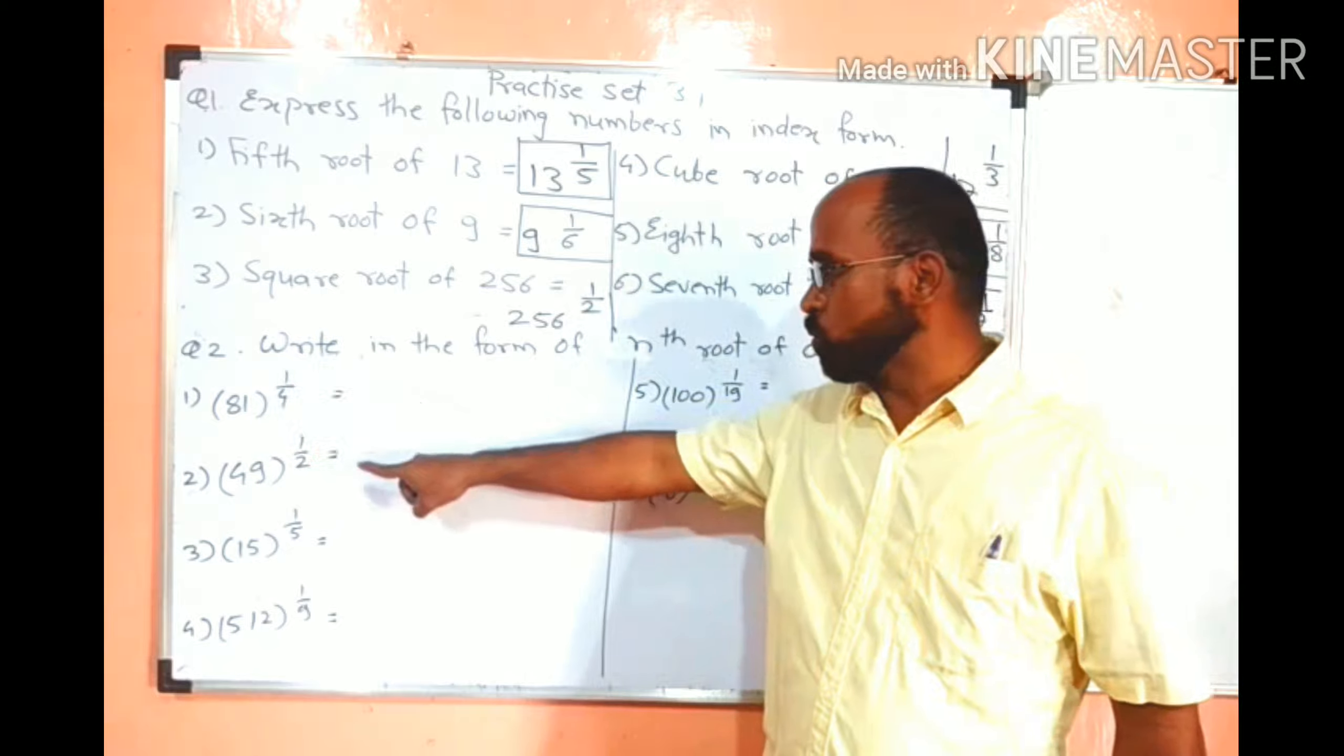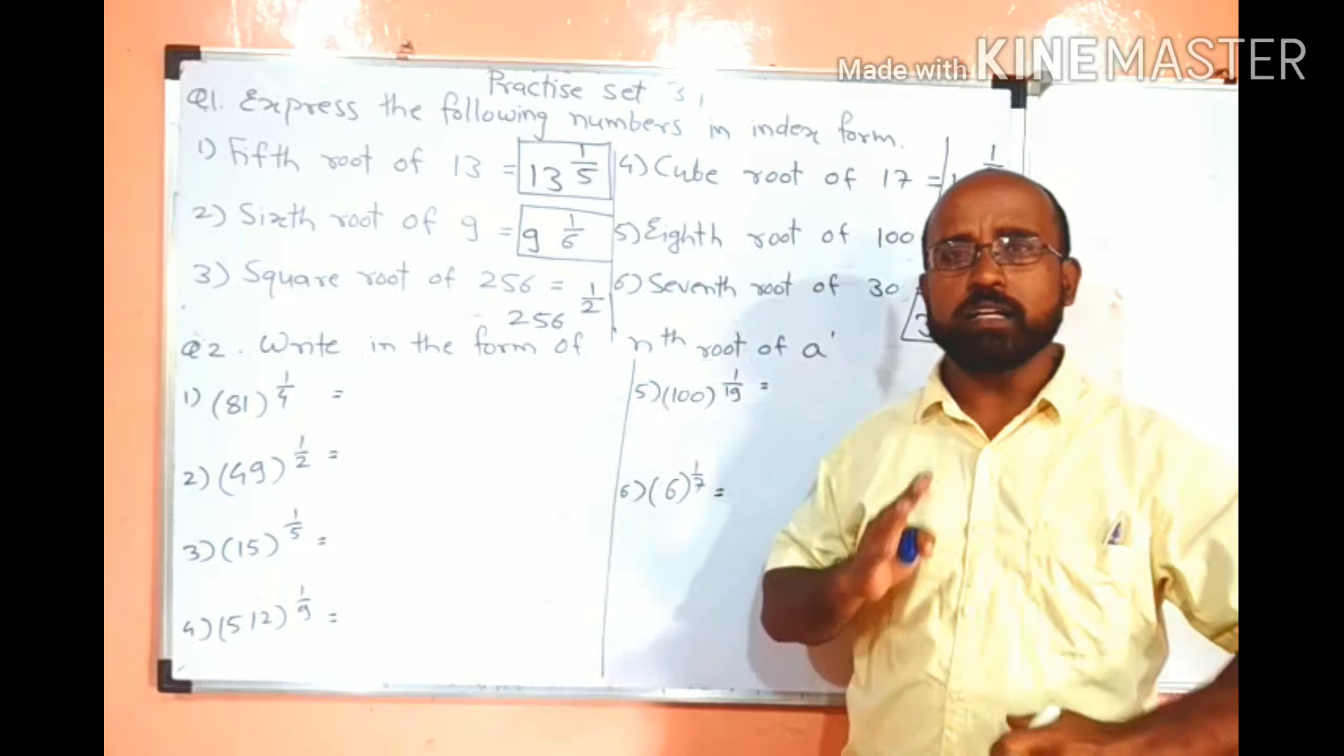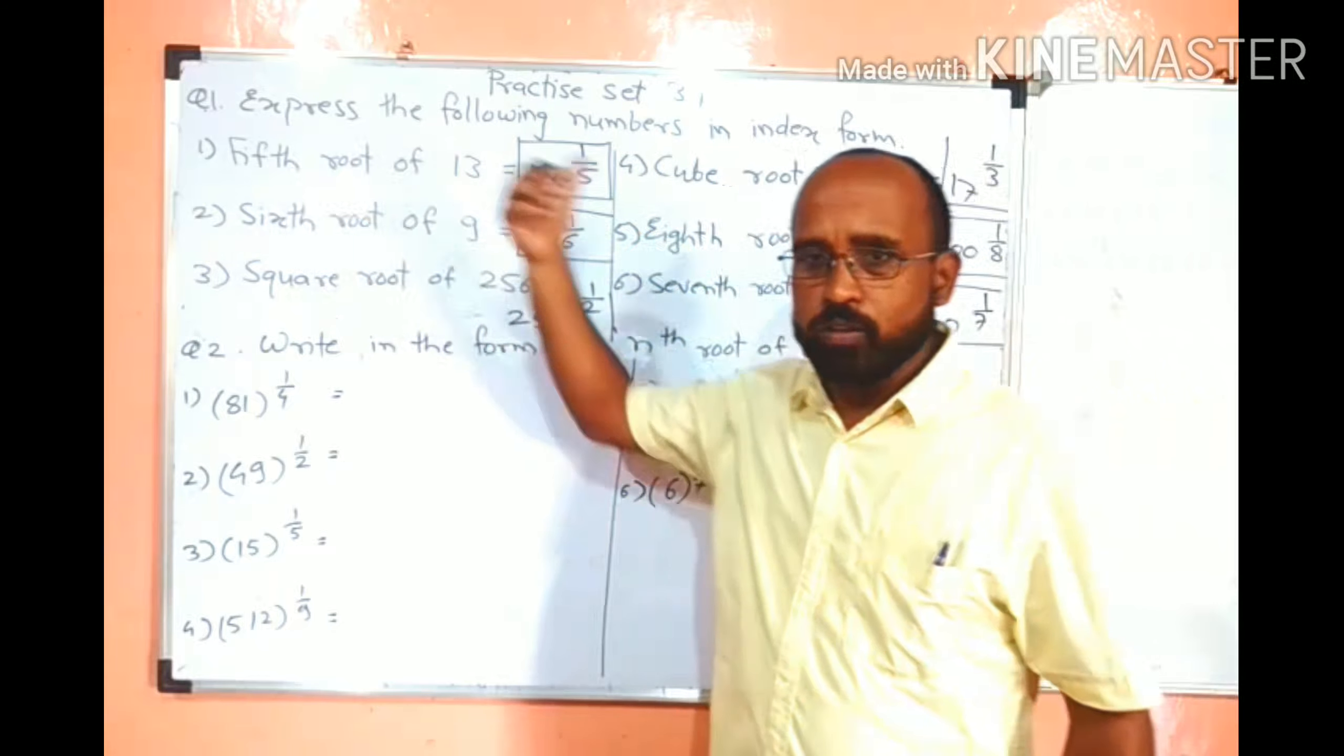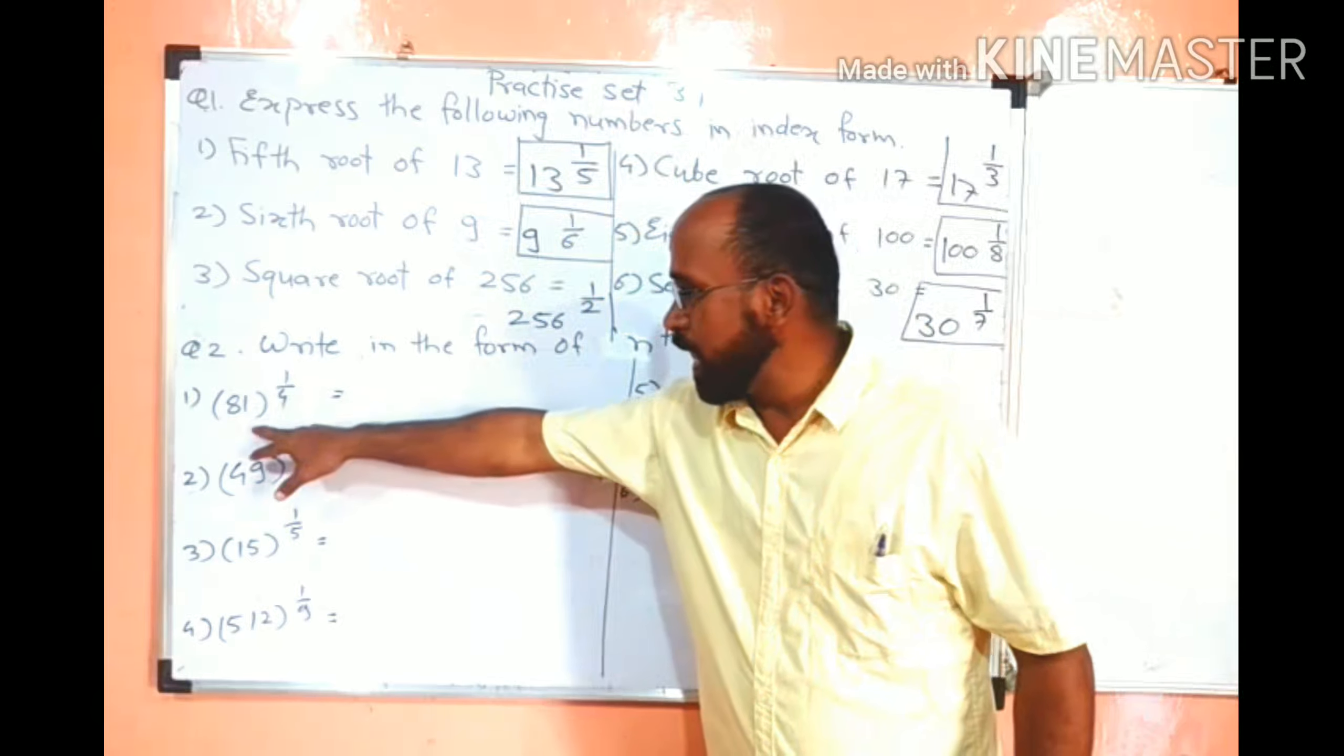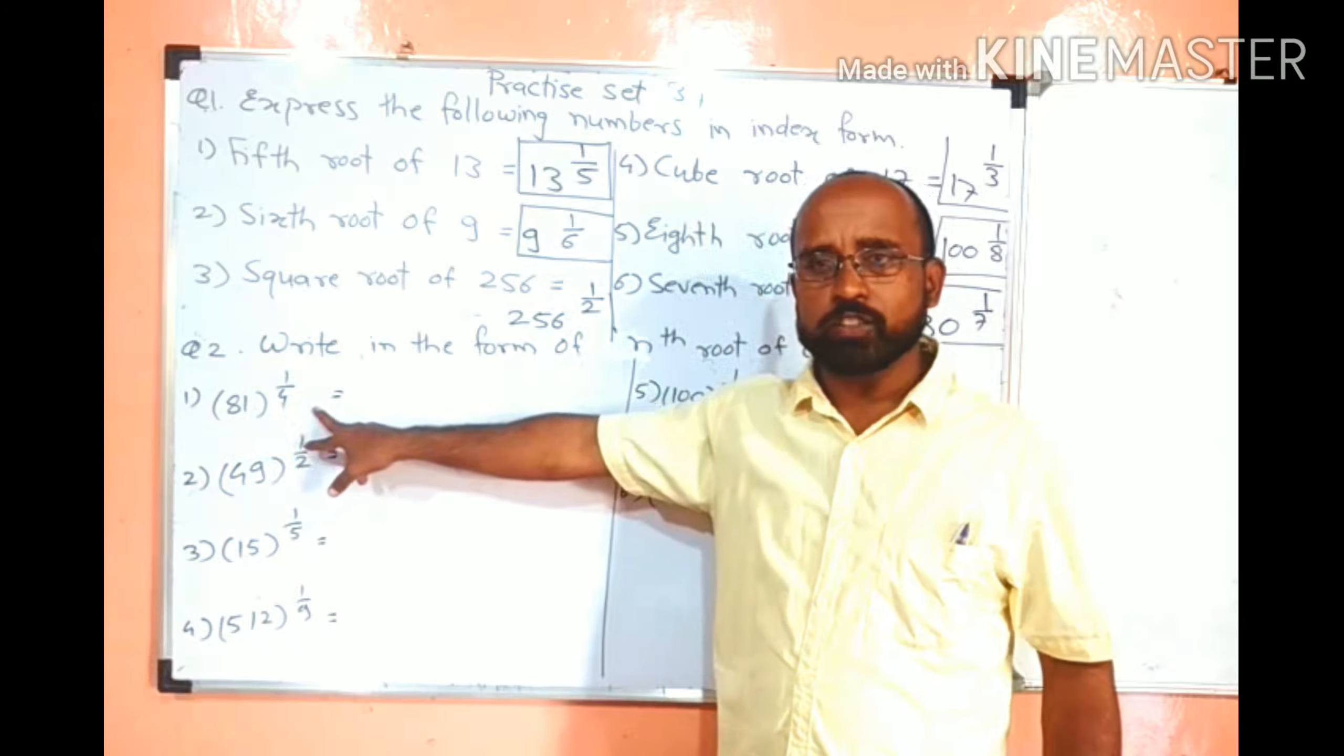Question number 2. Write in the form of nth root of a. So here we have to write in the reverse order. Means such kind of question is given, we have to write this kind of answer. So we just have to identify base and index. 81 raised to 1 upon 4. So which number is base? 81. Which number is index? 4.